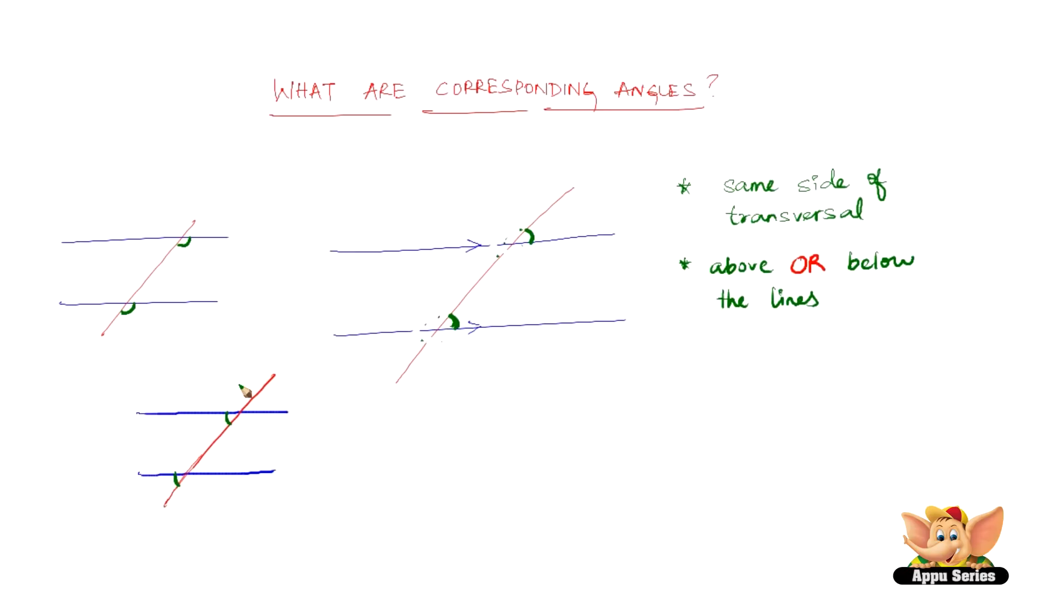Why? Because they are on the same side of the transversal. So here, the two angles are on the left side of the transversal, and both the angles are below these blue lines.